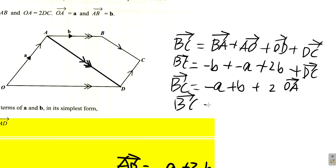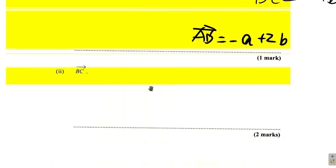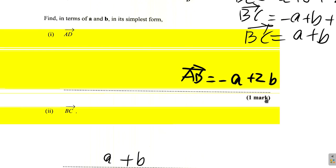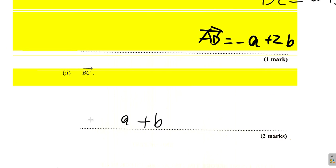And then plus DC. DC is 2 times OA. So BC then is equal to negative a plus b plus what? 2 times OA. But OA is a, so it's 2 times a. So BC is equal to negative a plus 2a would be a. So it's a plus b. So here BC would be a plus b. You see that? So BC equals a plus b.